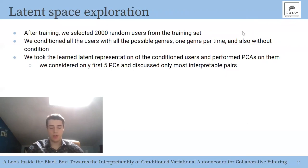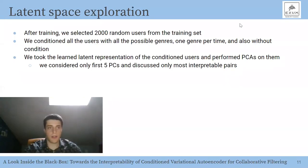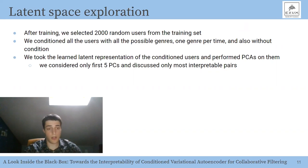To explain the conditional variational autoencoder model, we decided to explore its learned latent representation, analyzing what happens in the latent space when we change the condition for a group of users. After training, we selected 2,000 random users from the training set of the MovieLens 20 Million dataset, conditioned all of them with all possible genres one at a time and also without condition, then took the learned latent representations and performed principal component analysis on them. We considered only the first five principal components and discuss the most interpretable pairs.